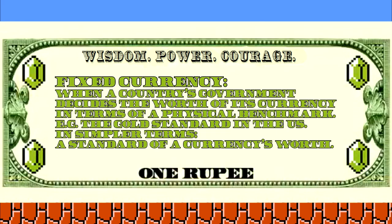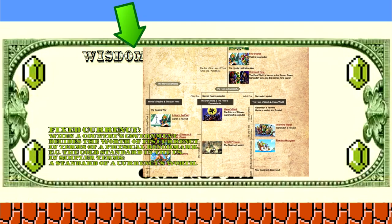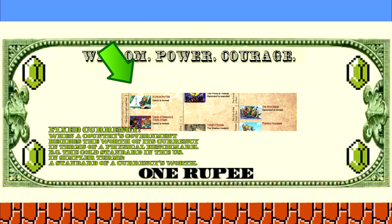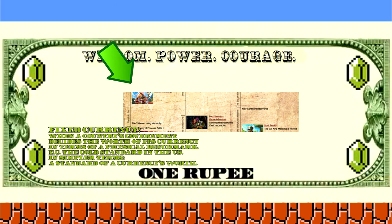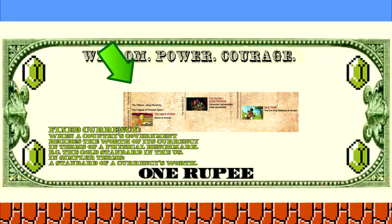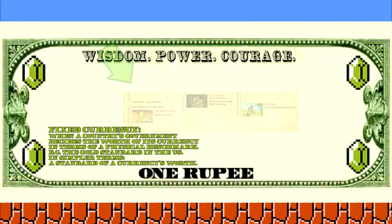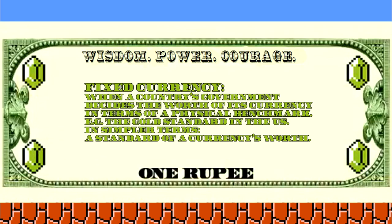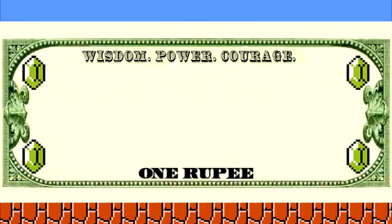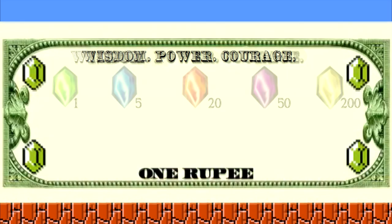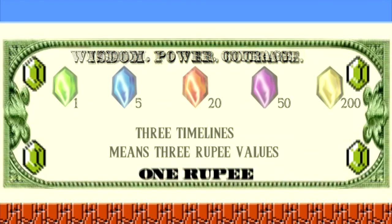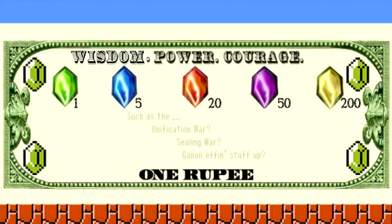Another thing we know is that there is no fixed currency in Zelda. In order to explain my point, let's take a quick look at the timeline. As you can see, there are three different and branching alternate histories, so there is no 'now' or current time. What does a split timeline have to do with the value of the Rupee, or really the economy of Hyrule in general?